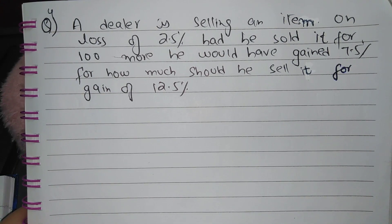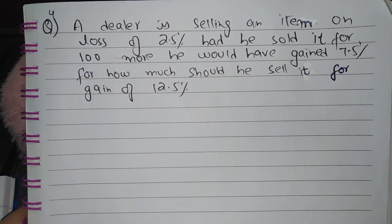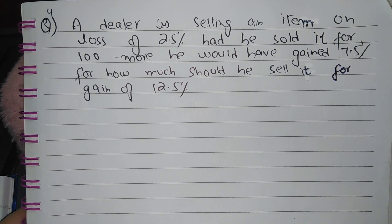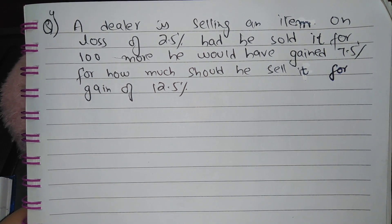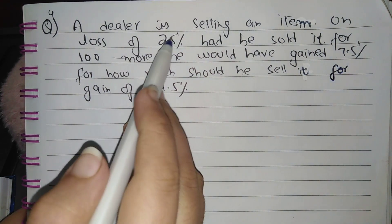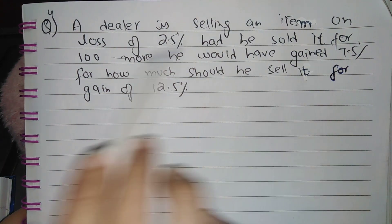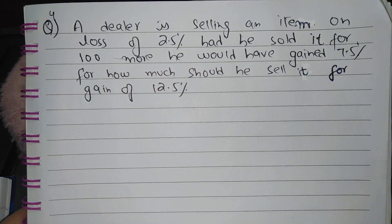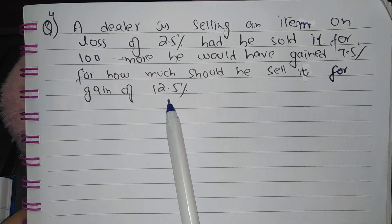The next type of question: a dealer is selling an item at a loss of 2.5 percent. Had he sold it for rupees 100 more, he would have gained 7.5 percent. For how much should he sell it to gain 12.5 percent? In this type of question, three important terms are given: initial loss percent (2.5%), the price difference (100), the previous new gain (7.5%), and you need to find the new selling price for a gain of 12.5 percent.